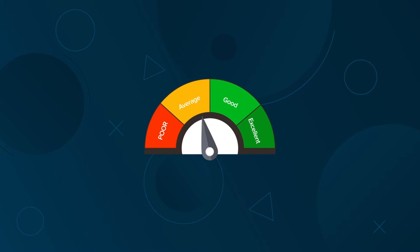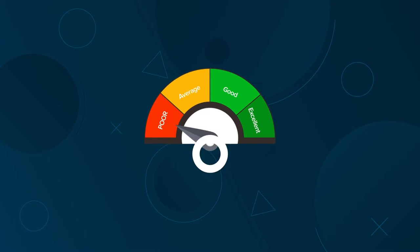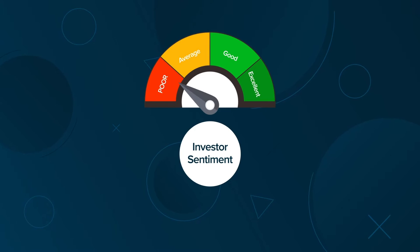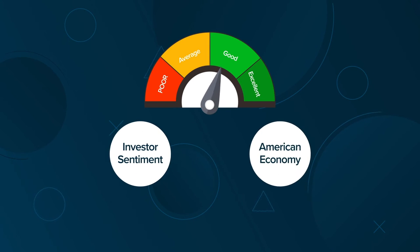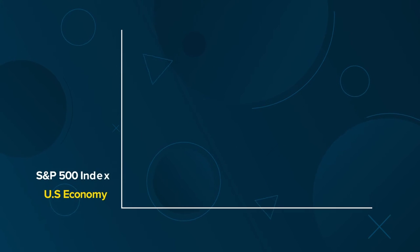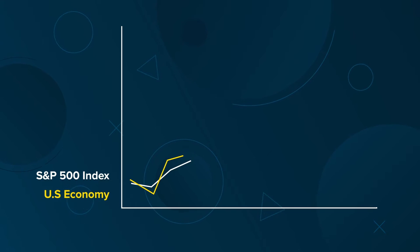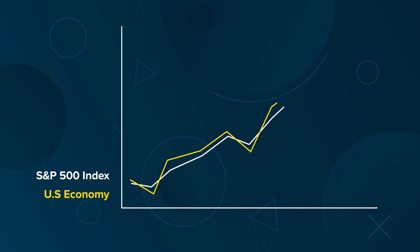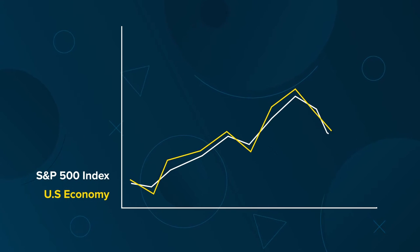The S&P 500 is widely considered a gauge of investor sentiment, and its returns reflect the state of the American economy. Thus, returns from the S&P 500 typically go up when the economy is doing well and typically trend downwards during a recession.